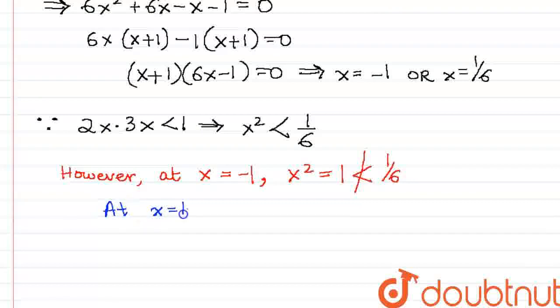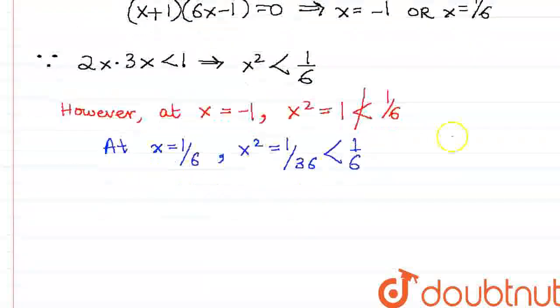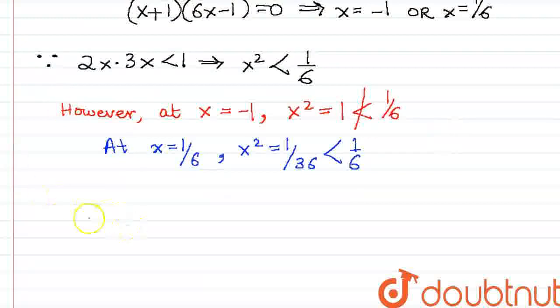At x equals 1 by 6, x squared is 1 by 36, which is less than 1 by 6. This satisfies our given condition. Hence, we can conclude that x is equal to 1 by 6.